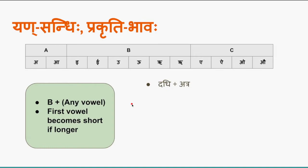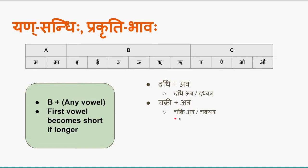For 'dadhi + atra': with prakriti bhava it becomes 'dadhi atra'; without prakriti bhava, yanaadesha sandhi is applied giving 'dadhyatra'. The next example is 'chakri + atra' — ikara plus akara. Ikara is a long (dirga) letter, so it becomes a short vowel, giving 'chakri atra' with prakriti bhava.